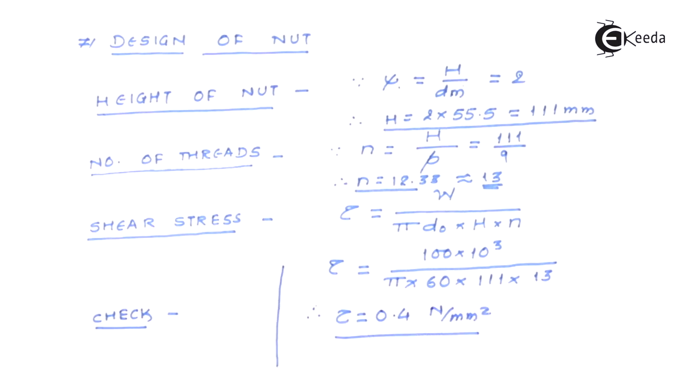Now one thing we need to understand that for bronze, the allowable value of tau is always greater than this value.